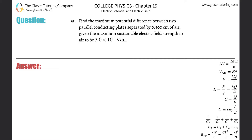Number 21. Find the maximum potential difference between two parallel conducting plates separated by 0.5 centimeters of air, given the maximum sustainable electric field strength in air to be 3 times 10 to the 6 volts per meter.